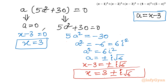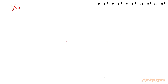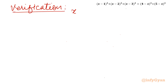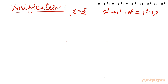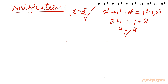So the two complex solutions are x = 3 ± i√6 and the one real solution is x = 3. Let's verify the real solution: substituting x=3 into the original equation gives LHS = 2³+1³+0³ = 9, and RHS = 1³+2³ = 9. So 9 = 9 — our solution is verified. The real-valued solution is x = 3.